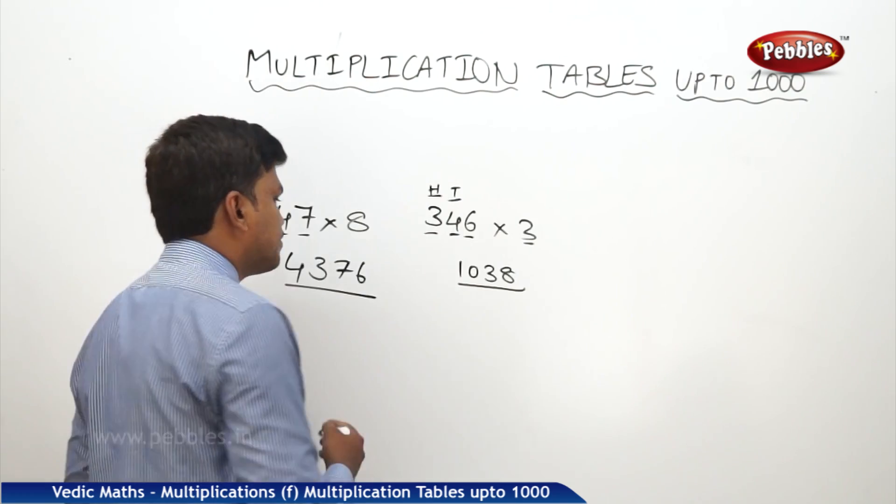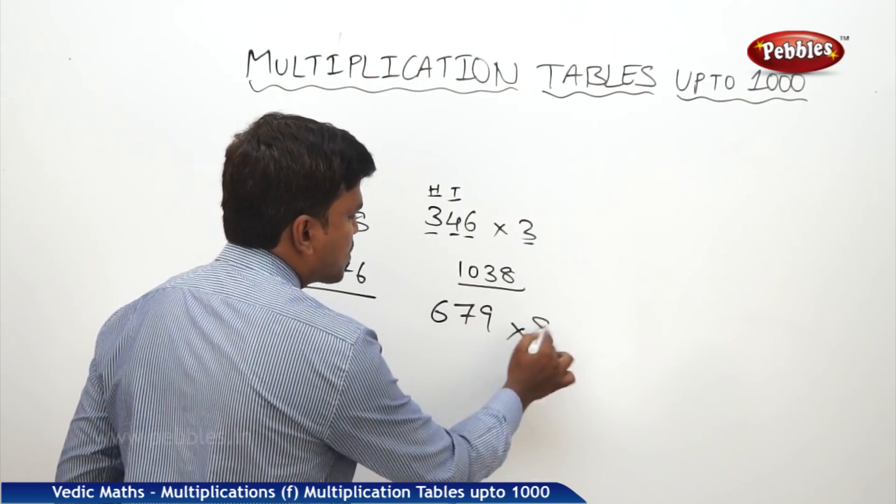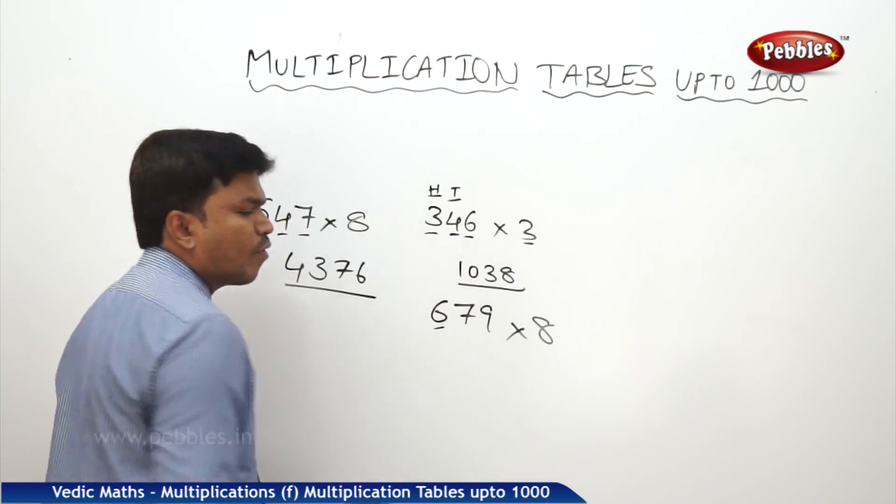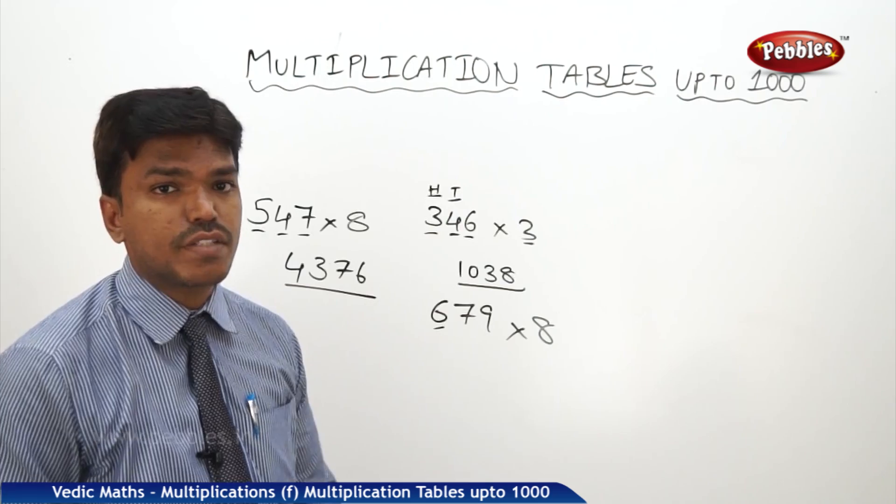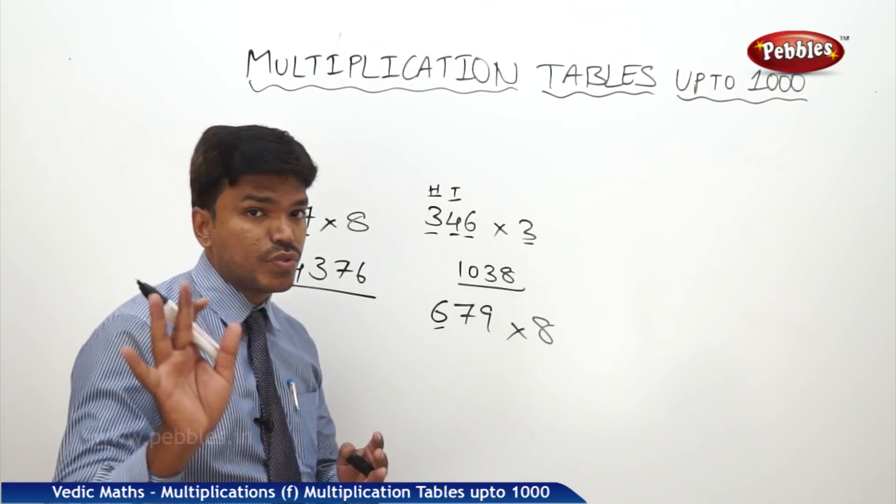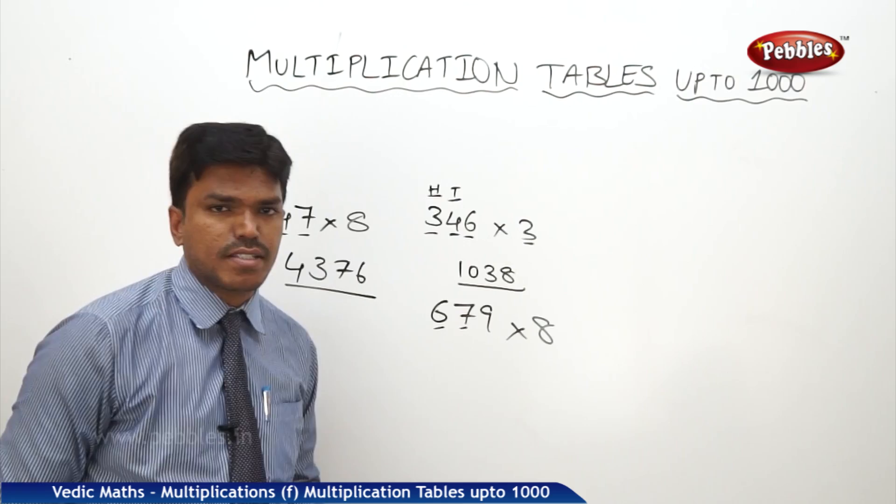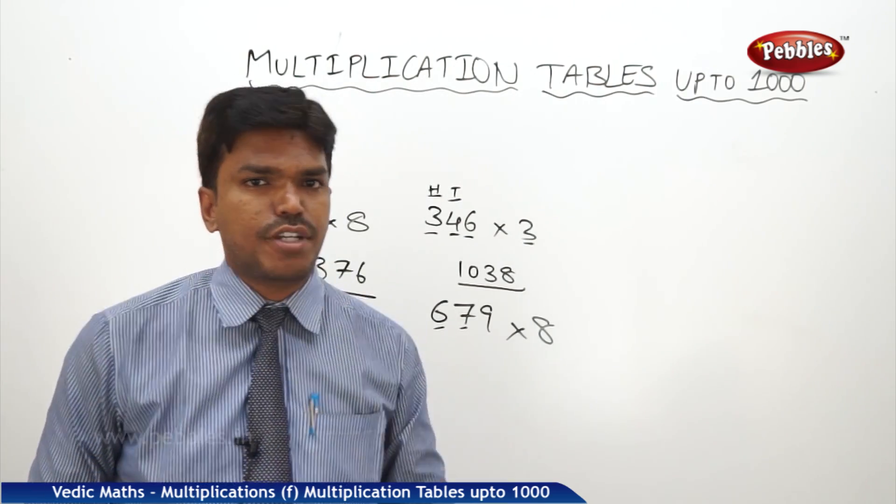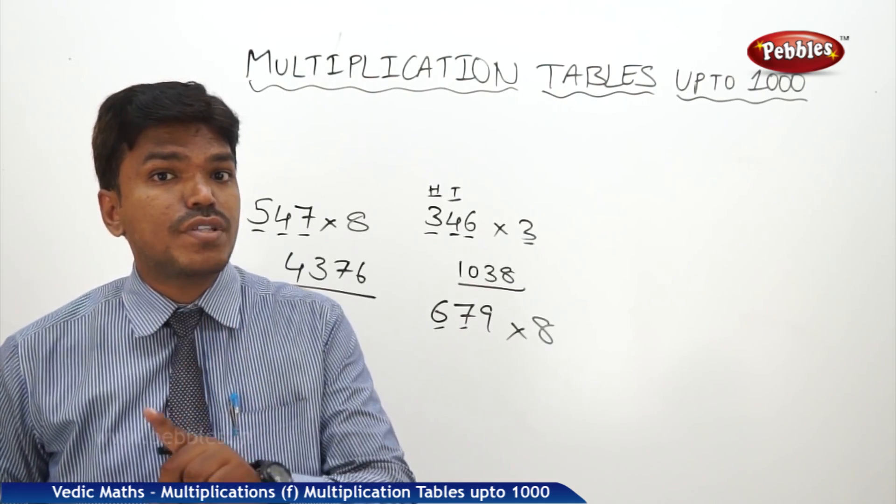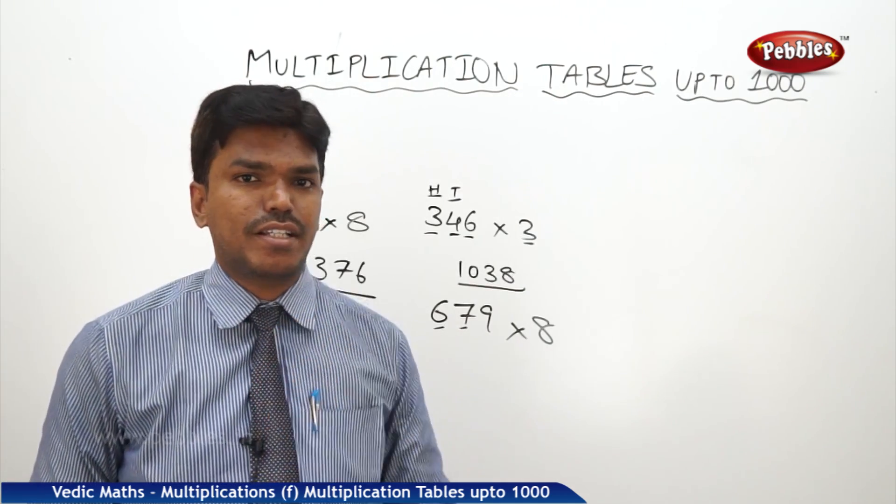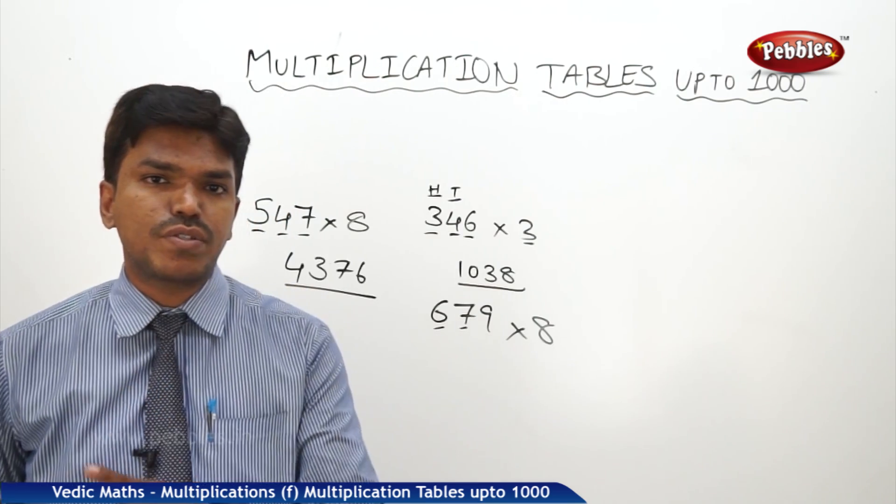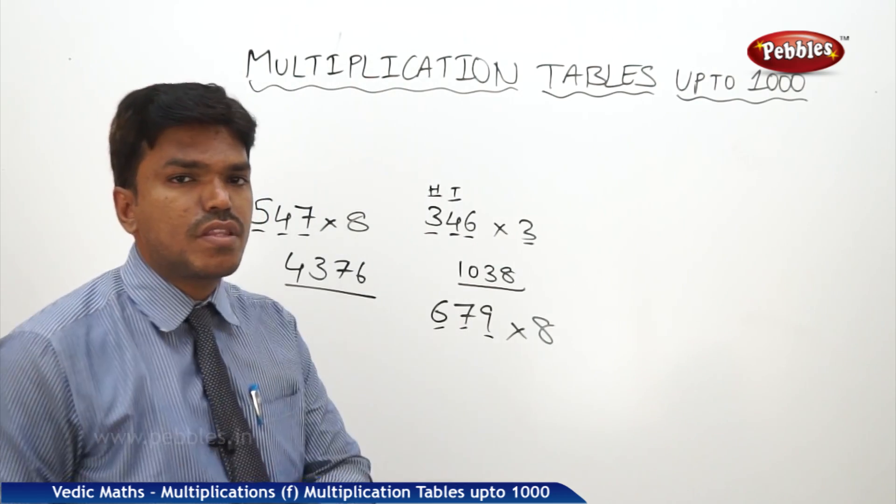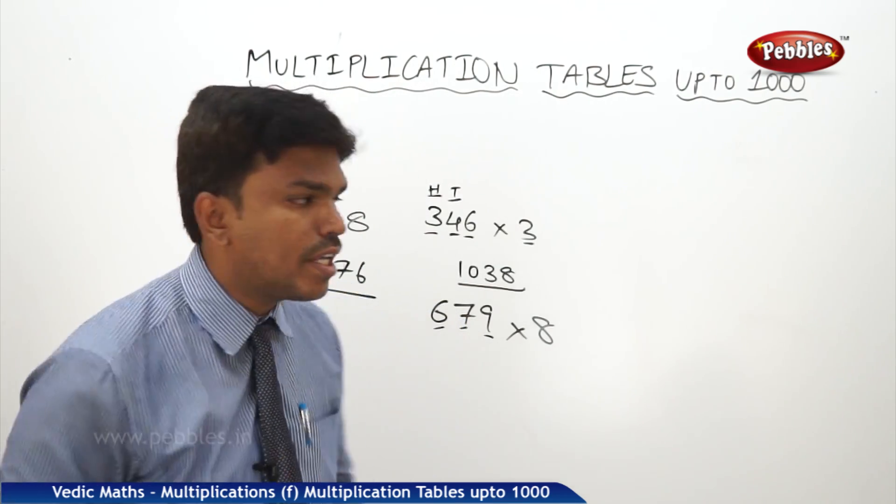One more example. 679 eight times. 8 sixes 48, take it as 4800. Keep in the mind 4800. What is 8 sevens? 56, take it as 560. 4800 plus 560, how much? 5360. 5360 plus 72. 5432.